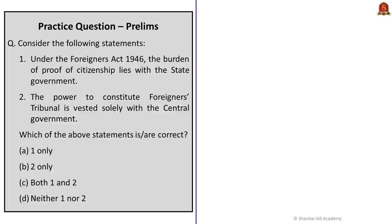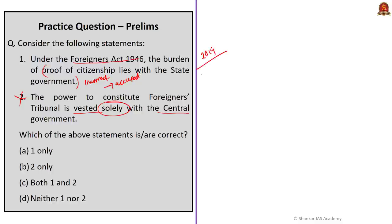Consider the following statements. Statement one: under the Foreigners Act 1946, the burden of proof of citizenship lies with the state government — this is incorrect, as the burden of proof lies with the accused. Statement two: the power to constitute foreigners tribunals is vested solely with the central government — also incorrect, because after the recent amendment, even state governments, UTs, district collectors, and magistrates can constitute foreigners tribunals. Both statements are incorrect. The correct answer is option D: neither one nor two.